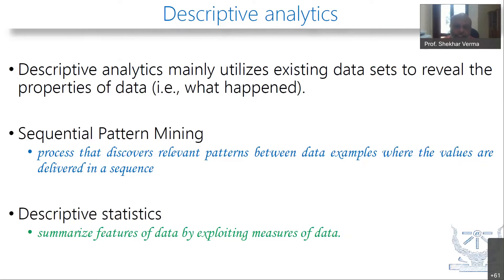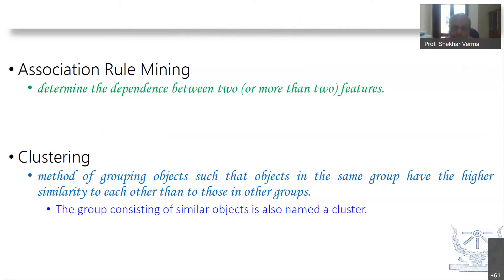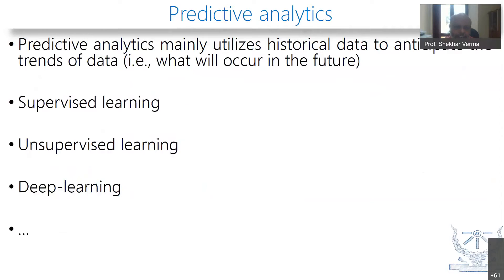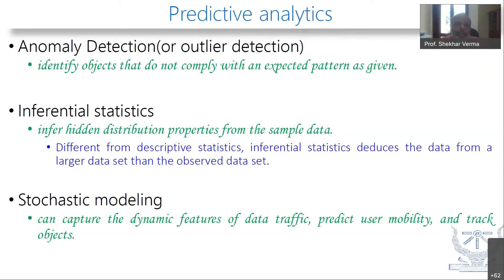Descriptive analytics utilizes existing data sets to look into the data. For example, we have sequential pattern matching, descriptive statistics, association rule mining, and clustering. Predictive analytics is where we learn and generalize — supervised, unsupervised, deep learning, semi-supervised learning, and so on. What we can do is go in for anomaly detection, inferential statistics, and stochastic modeling. We are able to predict from data and infer from data — that is predictive analytics. All machine learning and deep learning falls into this particular domain.